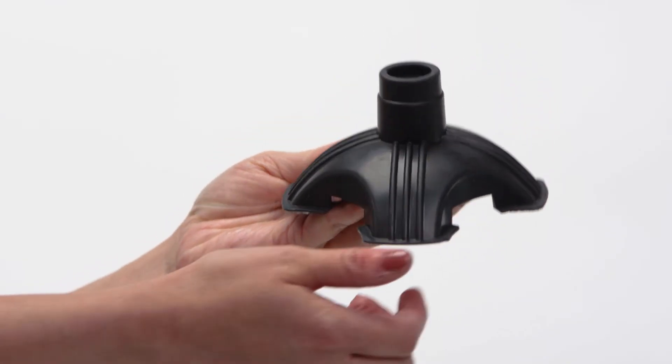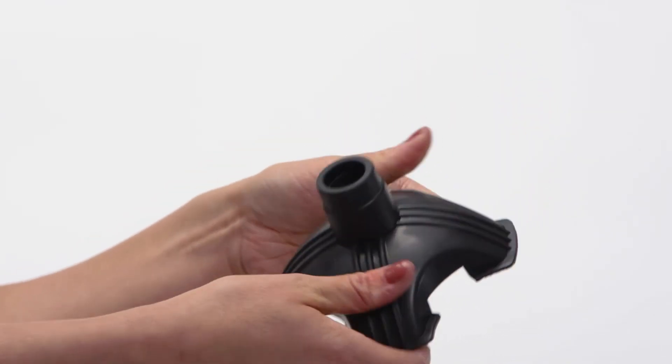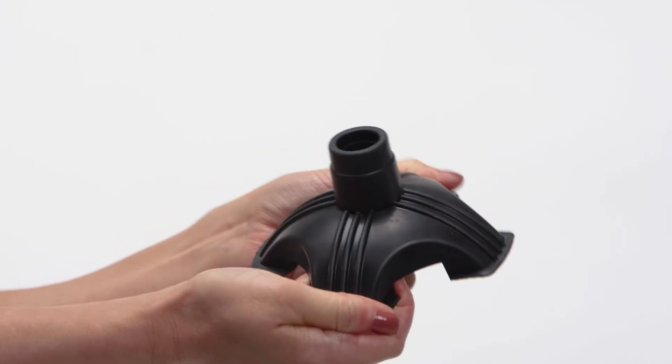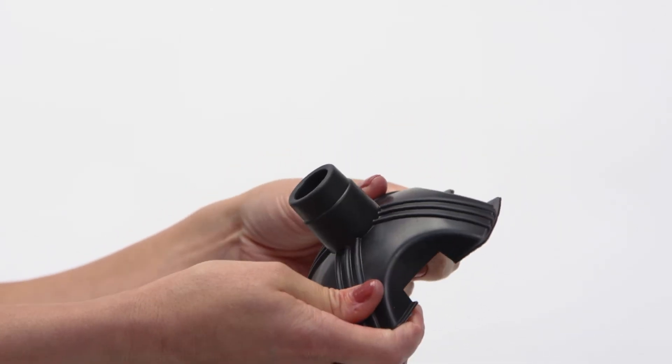This Quad Cane Tip is made from durable, anti-slip rubber that absorbs the shock of each step to reduce pressure in your hand and wrist.